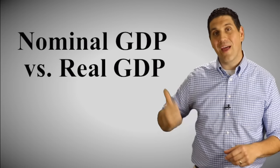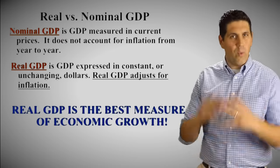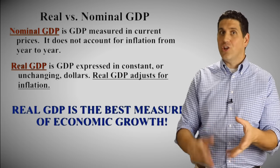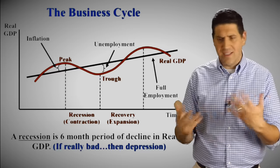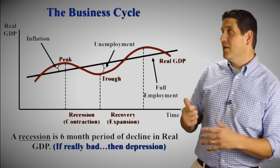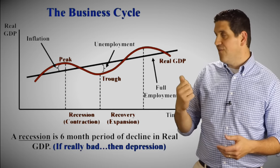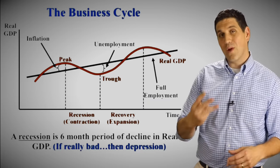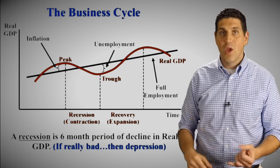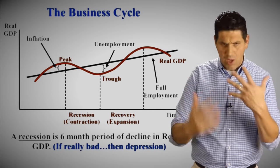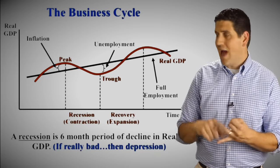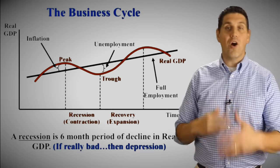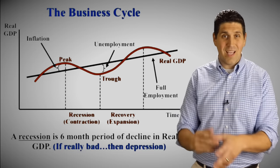Another concept is nominal versus real GDP. Nominal GDP is not adjusted for inflation; we usually analyze real GDP because it adjusts for inflation and shows what we're actually producing. A great way to show this is the business cycle, which has four phases: peak, recession, trough, and expansion — the economy goes up and down over time. This tells you the economy can be at full employment where GDP is moving nice and steady, in a recessionary gap where unemployment is very high, or in an inflationary gap where the economy is overheating and experiencing more inflation.